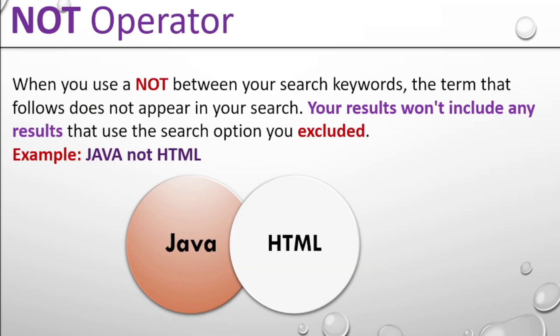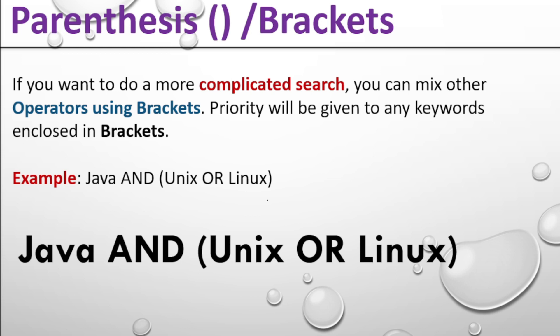Next is the NOT operator. When you use NOT between your search keywords, the term that follows will not appear in your results. Your results won't include any result that uses the excluded search option. When you use NOT, that keyword does not appear in your search. Example: Java NOT HTML — the HTML keyword is excluded from your search.